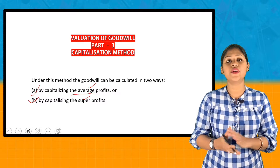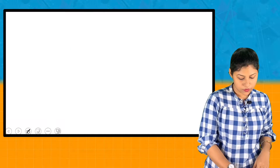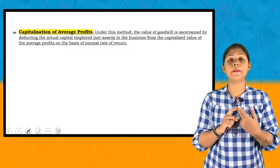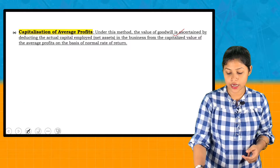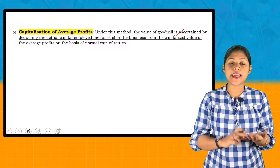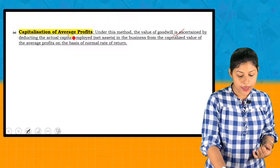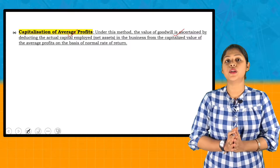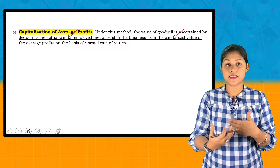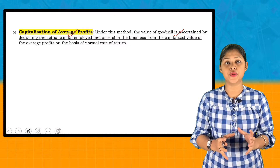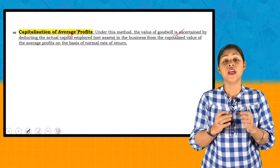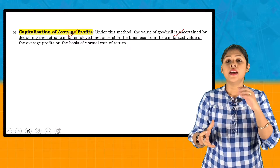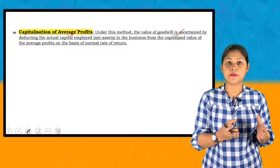Let's start with the first method: Capitalization of Average Profits. First, we calculate the average profit, then we calculate the capitalized value of average profits. The second thing is the capital employed by the business. Capital employed refers to the funds used in day-to-day business operations. The formula for capital employed is total assets minus current liabilities.